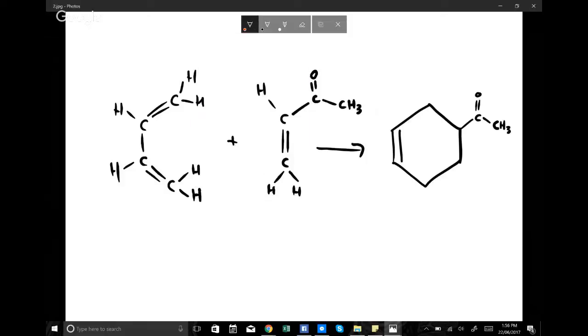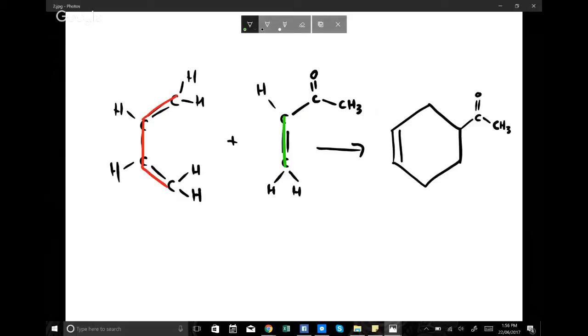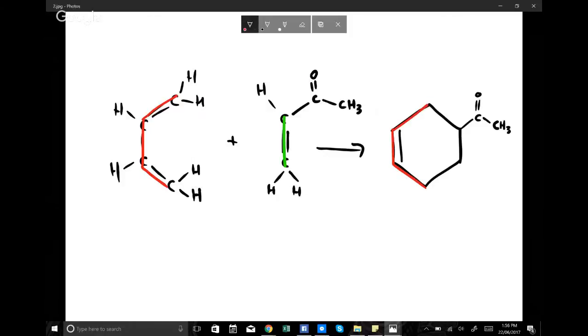Okay, so there we go. That's where they end up in the product. We've got our red backbone and we've got our green backbone. And hopefully you notice that the double bonds on the original reactants go away, so they disappear, and a new bond is formed here.